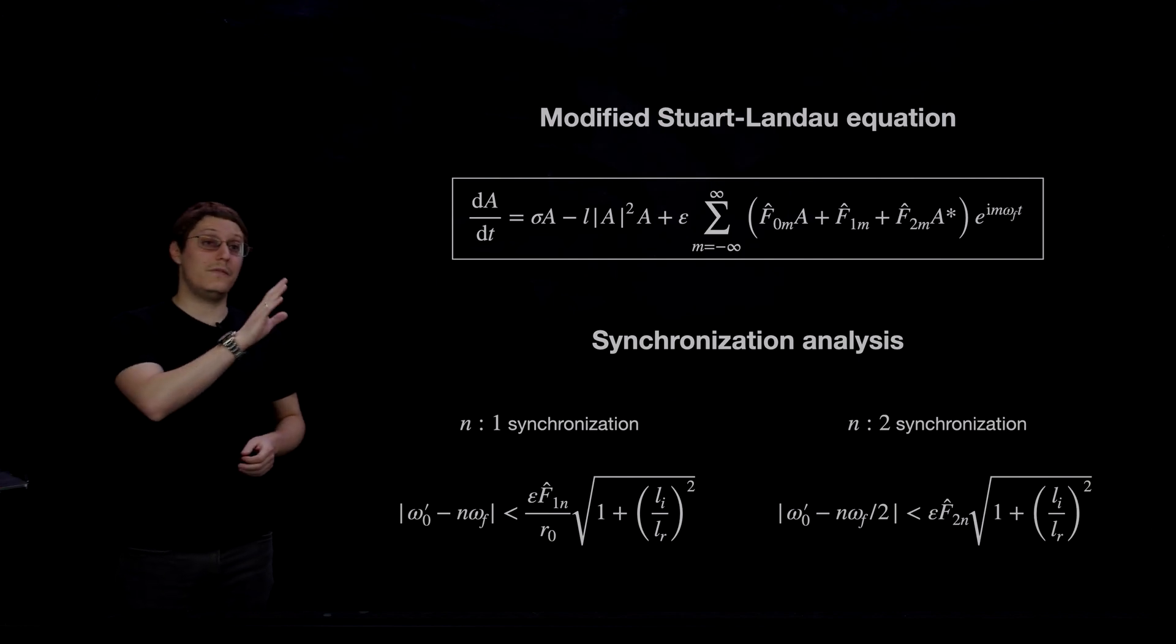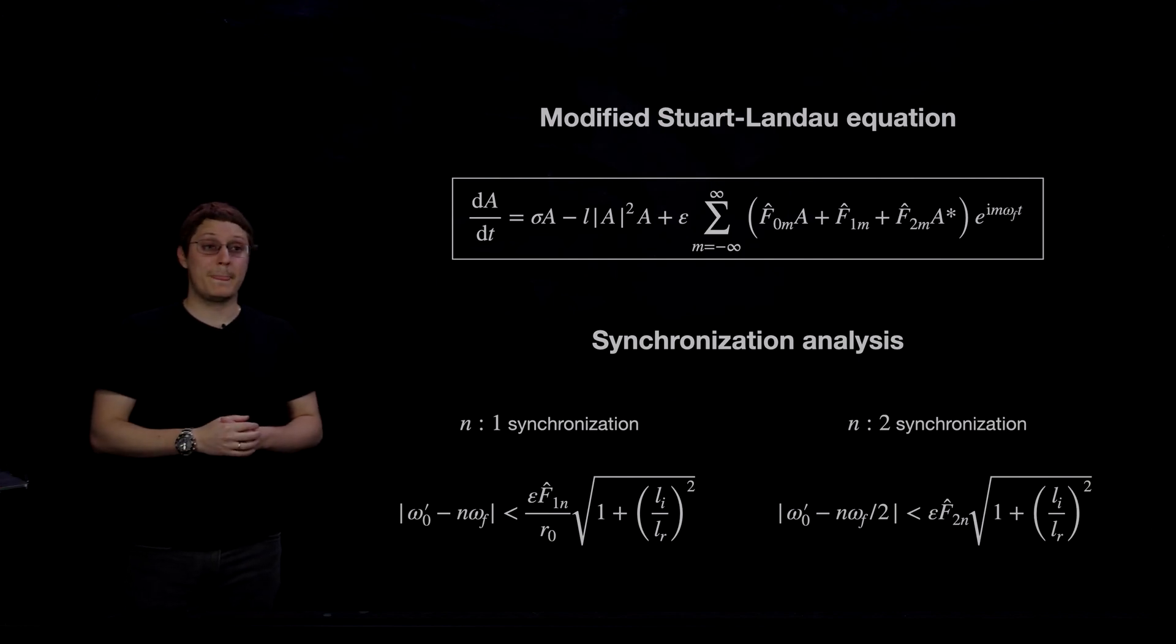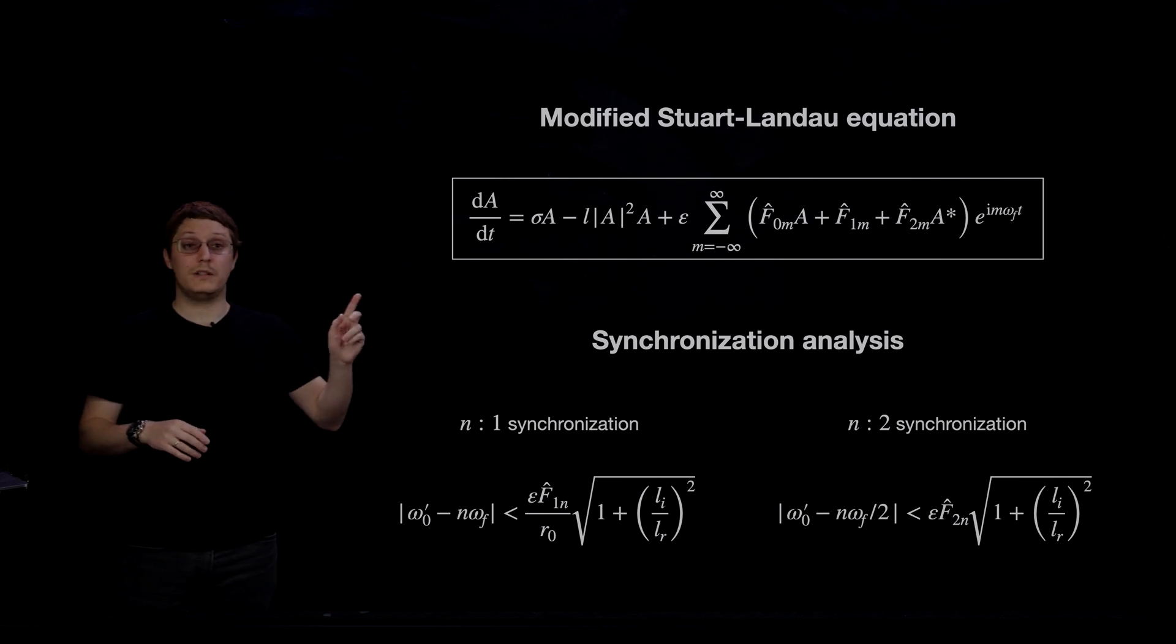So this is our modified Stuart-Landau model, and here is where synchronization comes in. Because our model is relatively simple, we can analyze its dynamics using some classical tools. And I'm going to skip over the details, but you can find all about them in the method section of the paper. What's important is that we find analytic expressions for the regions of synchronization that come in two flavors,